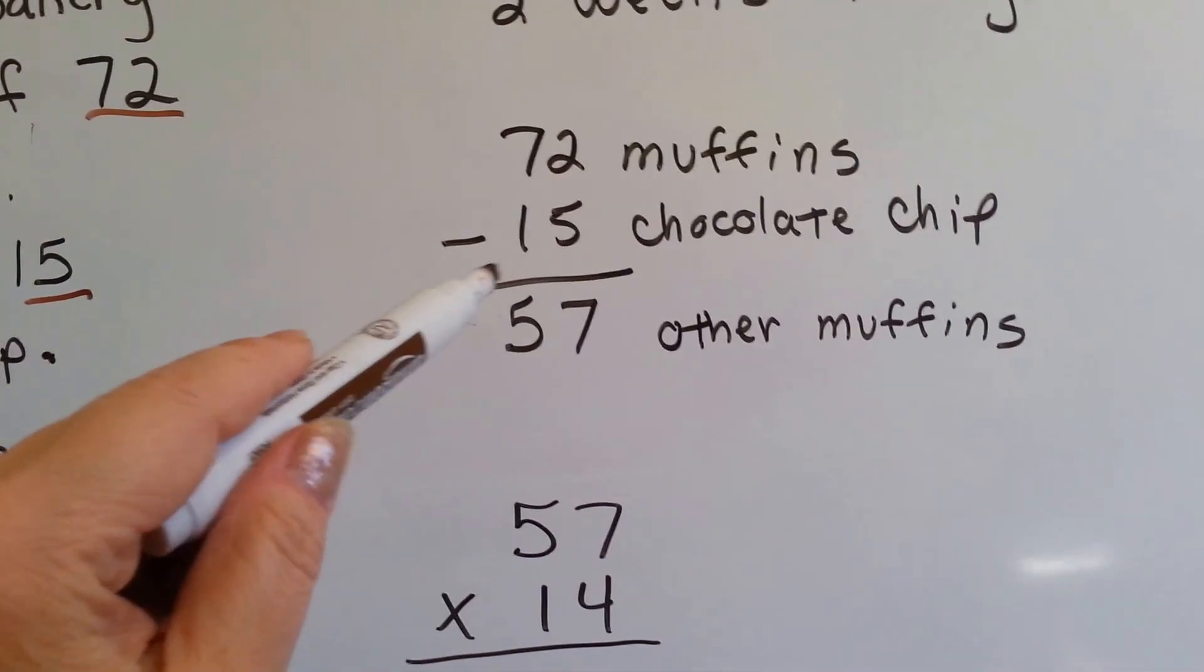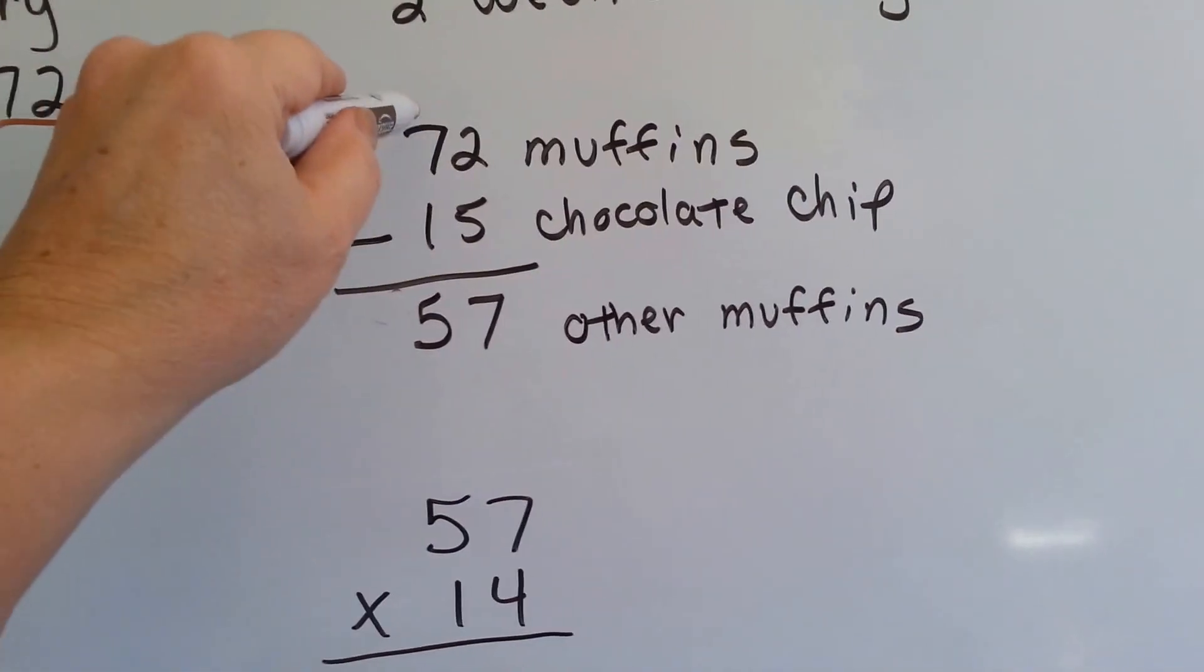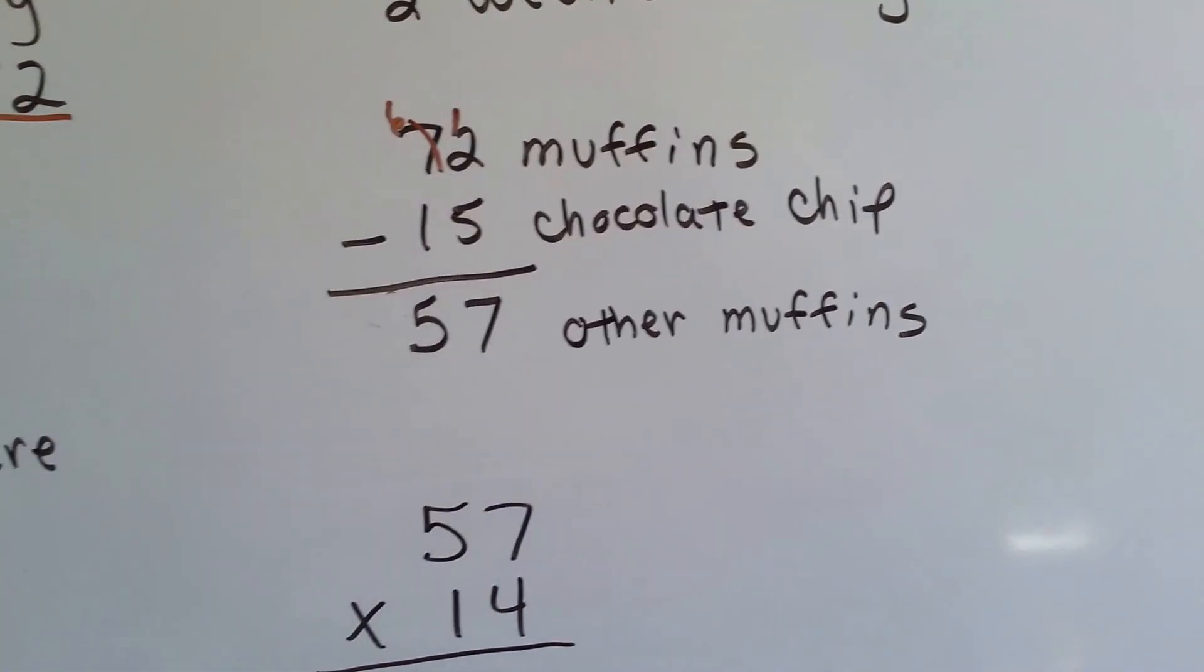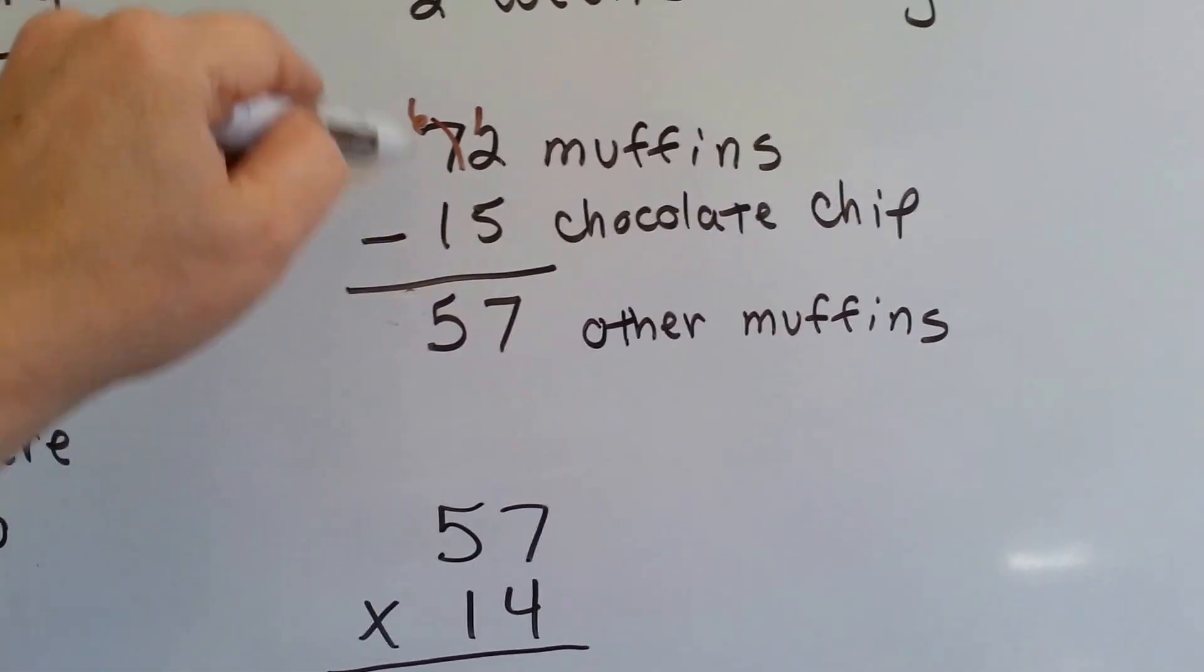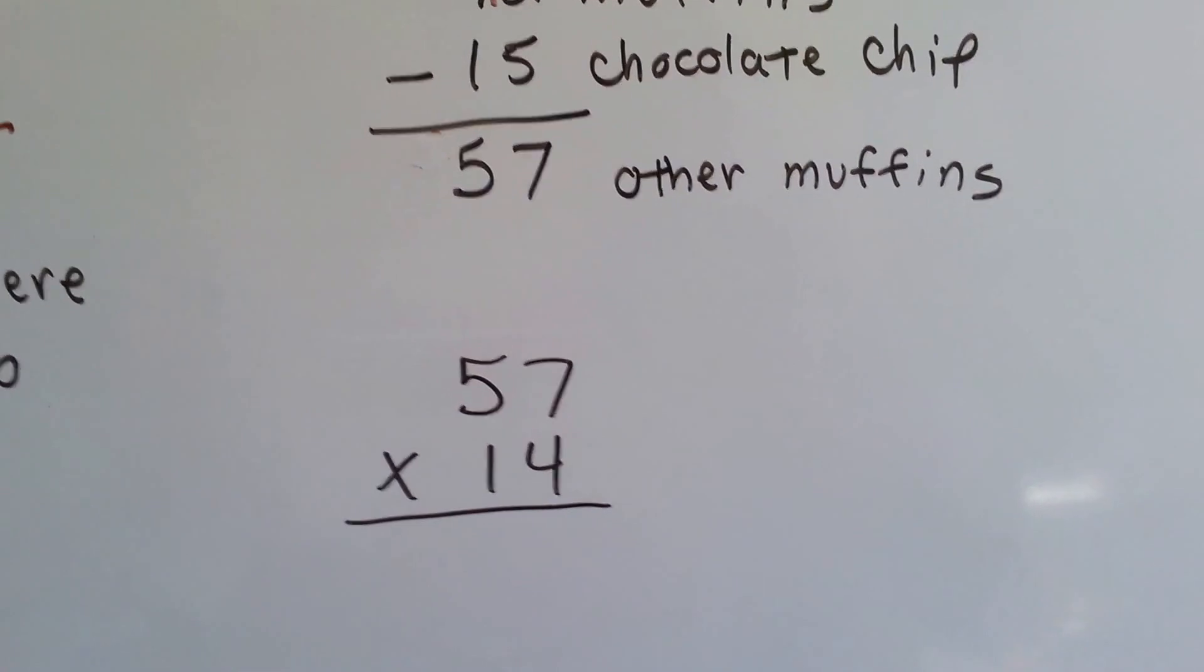So 72 muffins take away 15 muffins. 2 take away 5, you can't do it. So the 7 became a 6 and the 2 became a 12. 12 take away 5 is 7. 6 take away 1 is 5. So there's 57 other types of muffins.